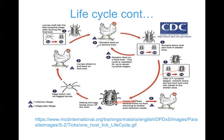In the soft tick life cycle, adults mate and lay eggs. The eggs hatch into six-legged larvae that get onto a host such as a chicken and feed, then molt to an eight-legged nymphal stage. The nymph feeds again and develops through further nymphal stages until it becomes an adult.